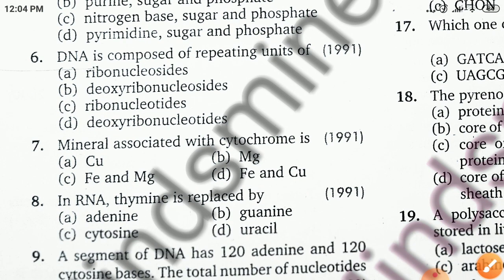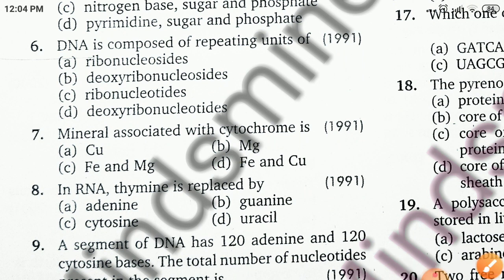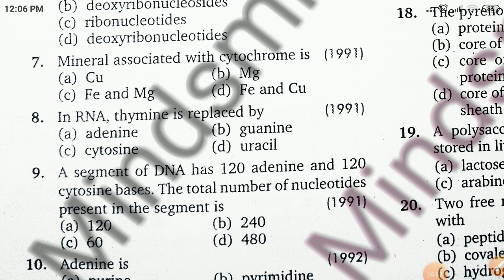The next question: which mineral is associated with cytochromes? Options are copper, magnesium, iron and magnesium, or iron. Cytochromes are associated with both iron and copper. Cytochromes are iron porphyrin or heme proteins, discovered as conjugated proteins composed of protein molecules with a non-protein group. The most important minerals in cytochromes are iron and copper — that is our answer.